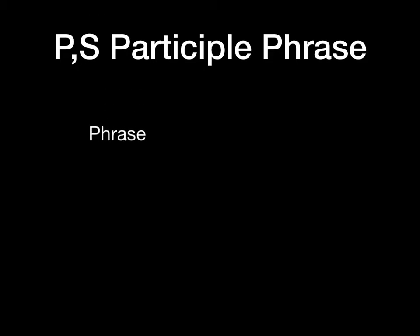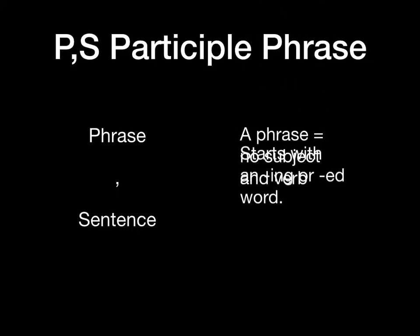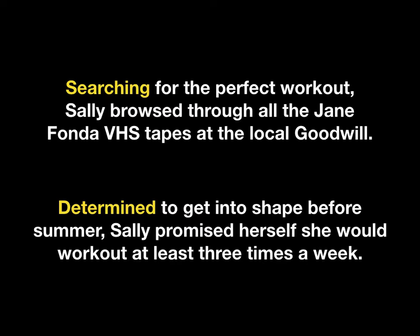Last time we learned P comma S — participle phrase — that's simply a phrase, a comma, and a sentence. Remember, a phrase is a group of words that has no subject and no verb, and a participle phrase always starts with an -ing or -ed word. For example, an -ing participle phrase: 'Searching for the perfect workout, Sally browses through all the Jane Fonda VHS tapes at the local Goodwill.' Sally is the one who is searching and the one who is browsing, so the phrase describes the subject. You can also write a P comma S with an -ed word like 'Determined to get into shape before summer, Sally promised herself she would work out at least three times a week.' The -ed word has to describe the subject, and Sally is the one who is determined.